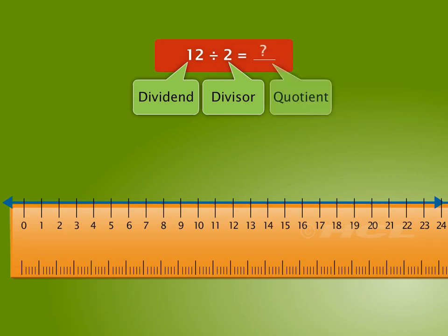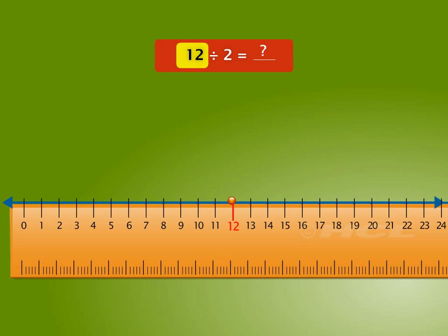Now, let's find the quotient. We start from the dividend 12 on the number line. Next, we start skip count backwards by 2, which is the divisor, till we reach 0.